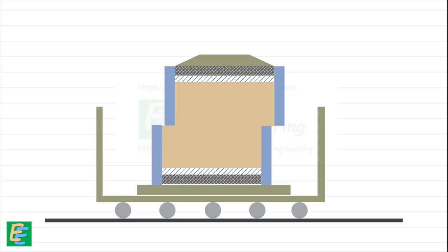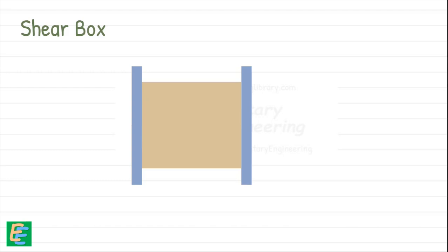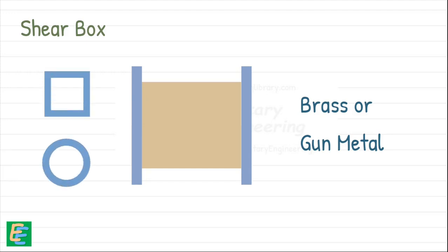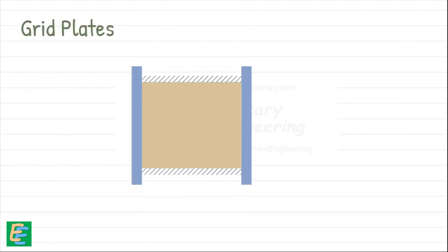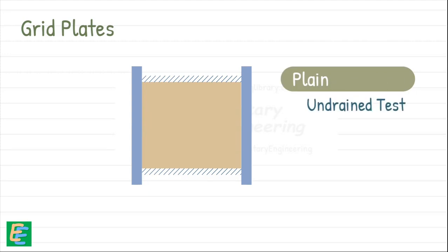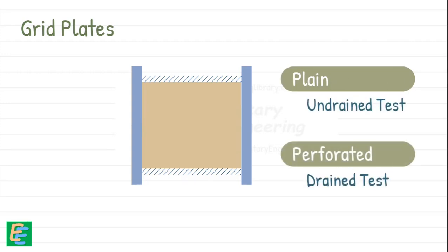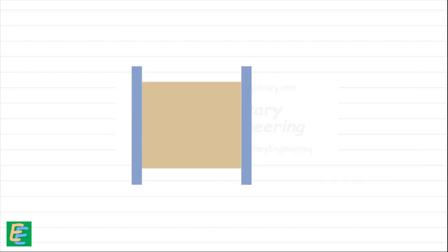For the test, the soil specimen is placed inside a shear box. This box is typically made of brass or gunmetal and can be either square or circular in shape. A common size for the square box is 60 by 60 by 50 mm. The box comes with grid plates — these are plain for undrained tests and perforated for drained tests.